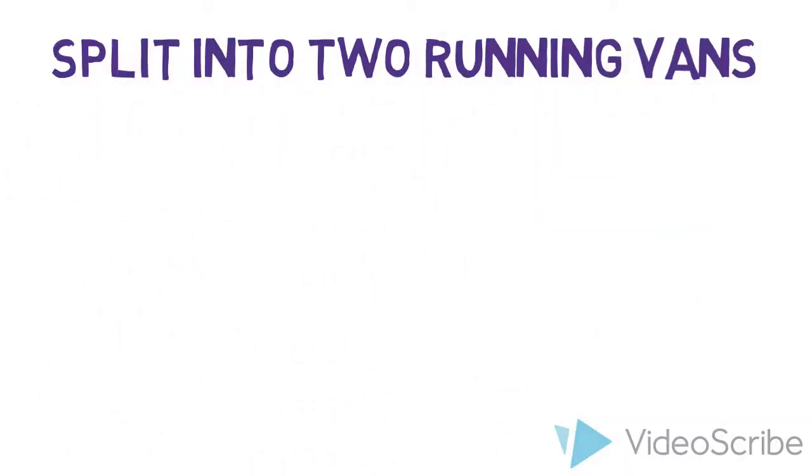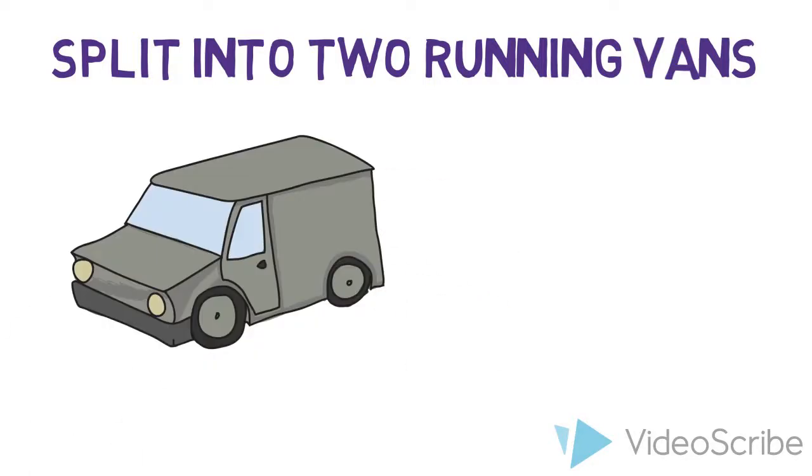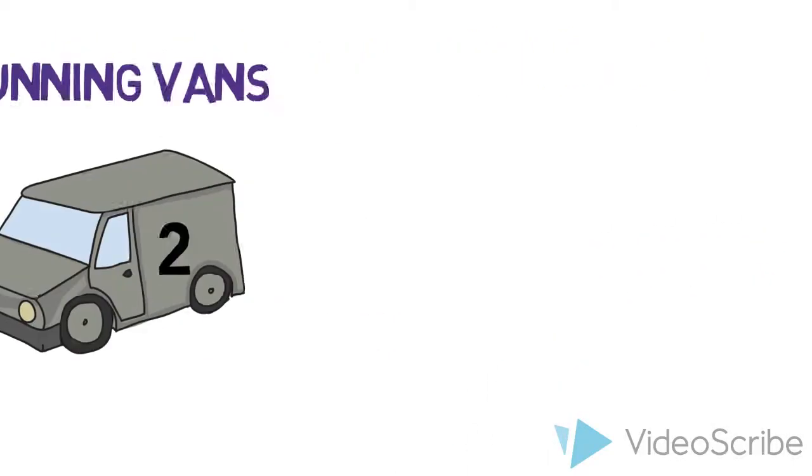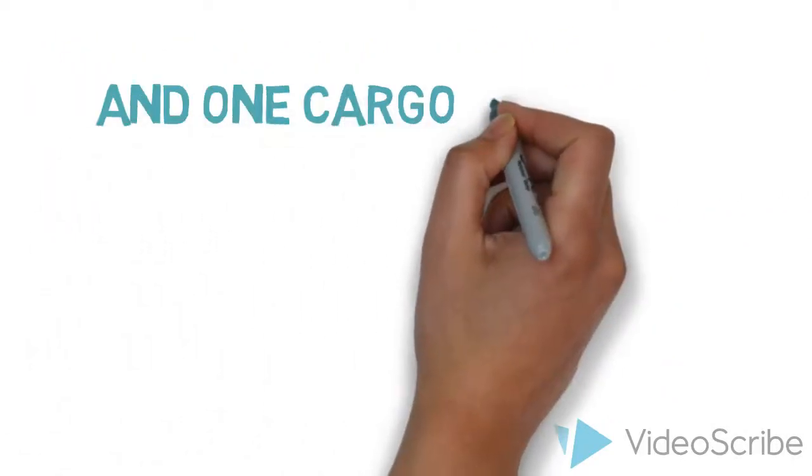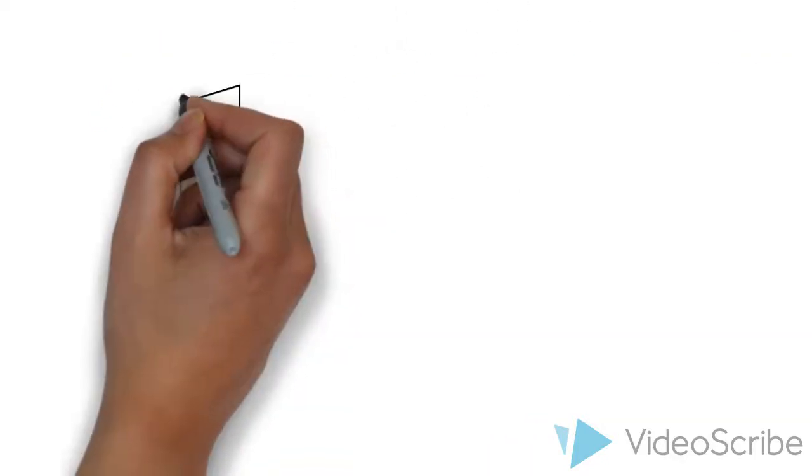The team will then split up into two running vans. These team members will be completing the mileage for the day. Two team members will drive the host van with all of your gear to the next city. Each van will have a route binder with turn-by-turn directions.